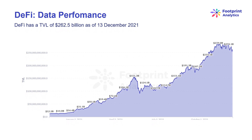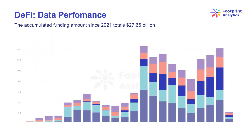According to Footprint Analytics, DeFi has a TVL of $262.5 billion as of December 13, 2021, while that was only $13 billion one year ago. The rapid development and growth of DeFi has cheered all those involved in the blockchain space, resulting in a large number of investment institutions. As of December 13th, the accumulated funding amount since 2021 totals $27.66 billion, compared to $3.4 billion in 2020 — a 626% increase.